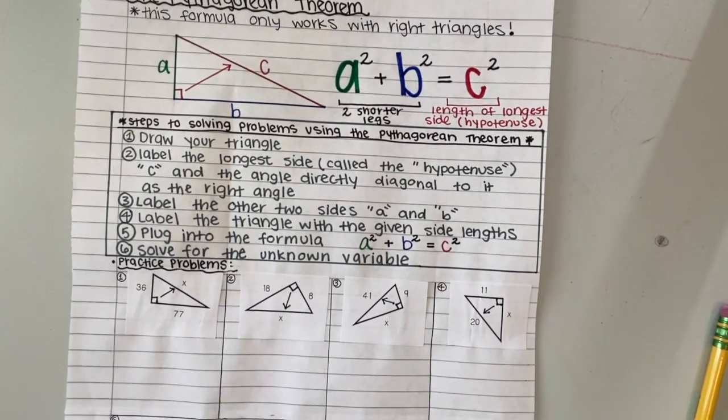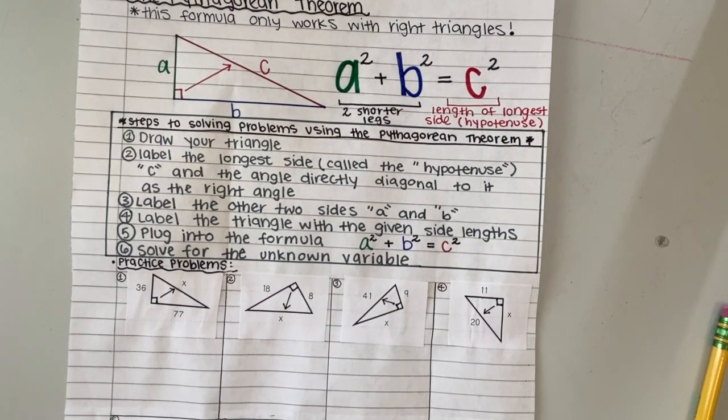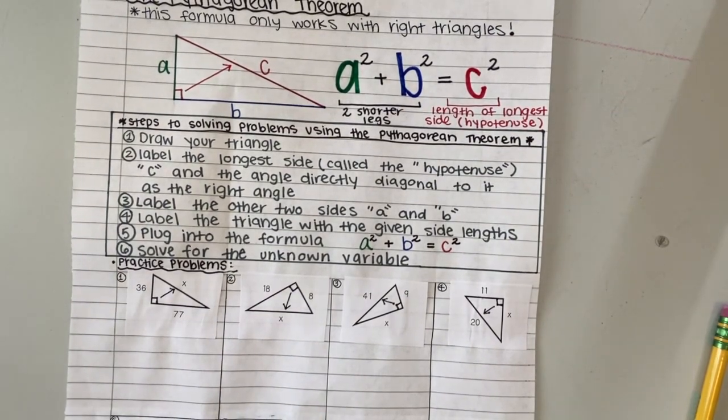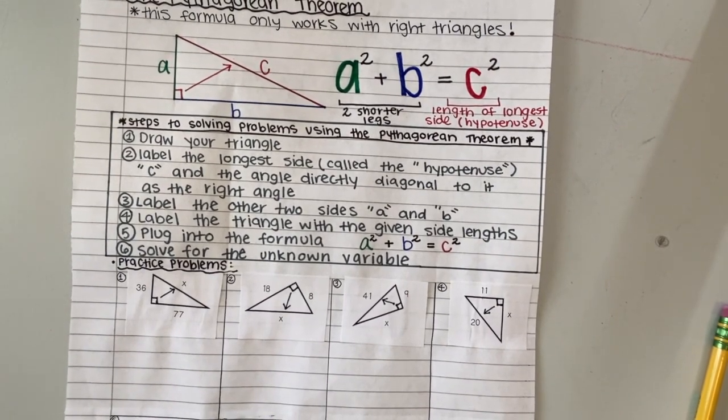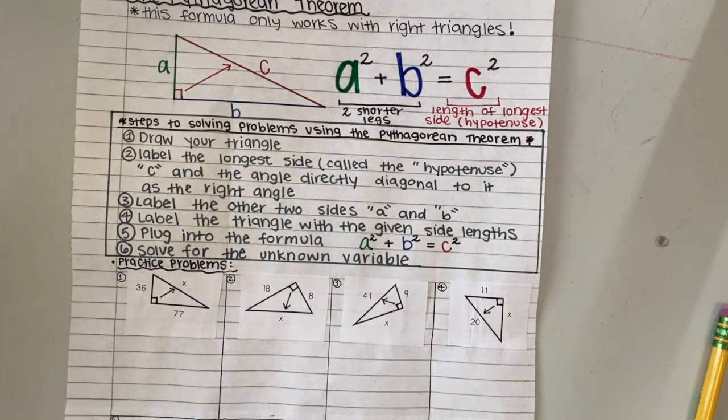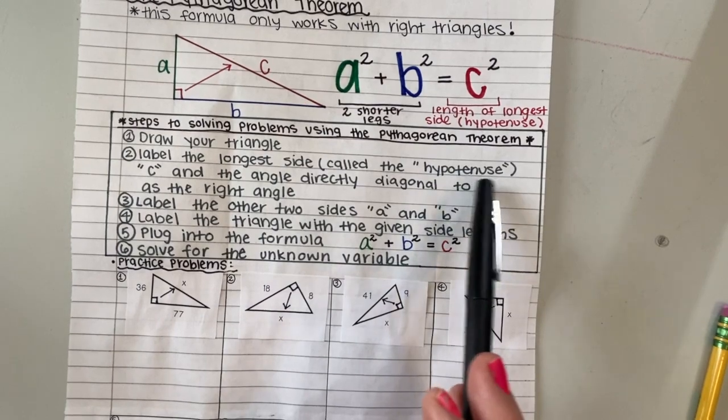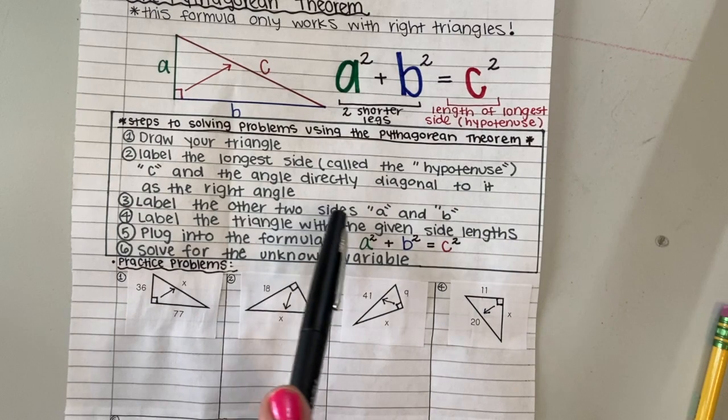So as usual, we have steps listed to tell us how to solve problems using the Pythagorean Theorem. My first step is to draw my triangle. A lot of times the triangle will already be drawn for you, but since we do testing online, you want to make sure you draw it yourself on paper so that you do not mix up the sides. Then we need to label the longest side, which is our hypotenuse C, and the angle directly diagonal to it as the right angle.